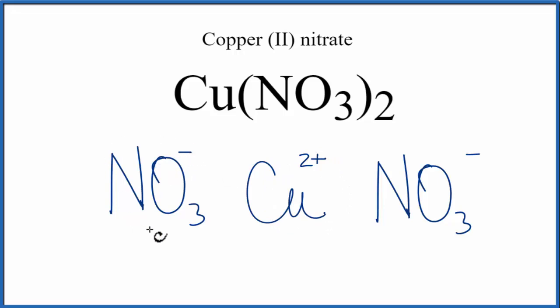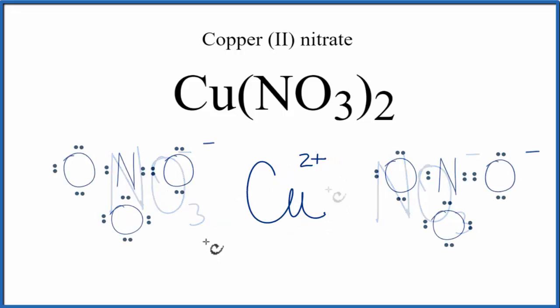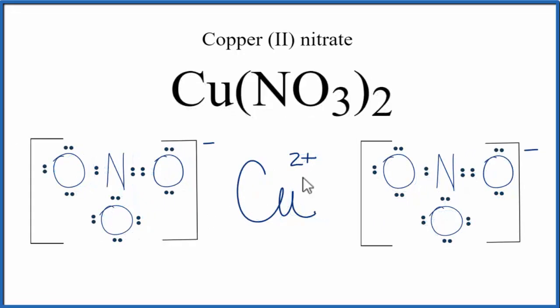Let's replace these nitrates with a Lewis structure. We should then put brackets around each of the nitrate ions. You'll often see brackets placed around this metal cation as well. So this is the Lewis structure for copper 2 nitrate.